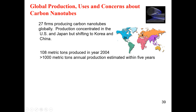About 108 metric tons of carbon nanotubes were produced in the year 2004, and that number was estimated to grow to greater than 1,000 metric tons of annual production within the next five years. This estimate was taken in 2004, projecting to around 2009-2010. Since today is 2021, the production may be more than double or triple that estimate.